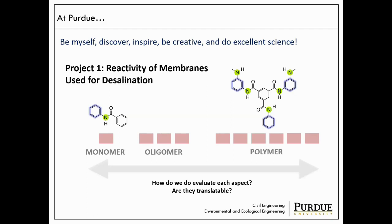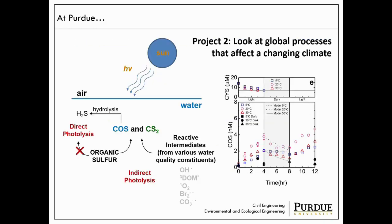I also have ongoing projects related to climate change — looking at how organic sulfur can undergo photochemistry to form low molecular weight sulfur compounds that undergo cooling when they reach the atmosphere. What are the cool transformations that occur in the water phase that subsequently affect atmospheric processes? And what are some external forces that can affect them?